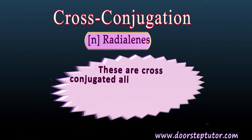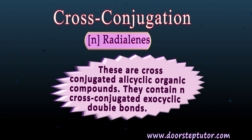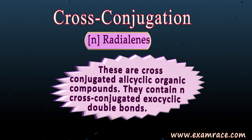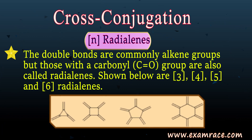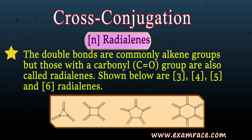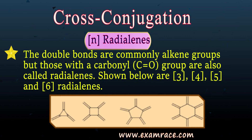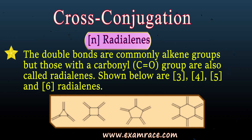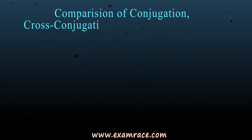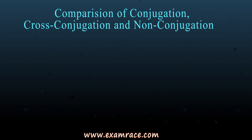Radialines are cross-conjugated acyclic organic compounds containing n cross-conjugated exocyclic double bonds. The double bonds are commonly alkene groups, but carbonyl (C=O) groups are also possible. The figures show 3-radialine, 4-radialine, 5-radialine, and 6-radialine respectively.